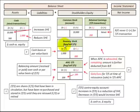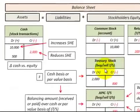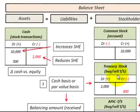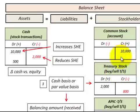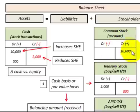To summarize: Treasury stock are shares of common stock that have been repurchased and stored in this Treasury stock account. The Treasury stock account is a contra account to our stockholders' equity. Where our normal stockholders' equity accounts have a credit balance for an increase, our Treasury stock account has a debit balance for an increase.